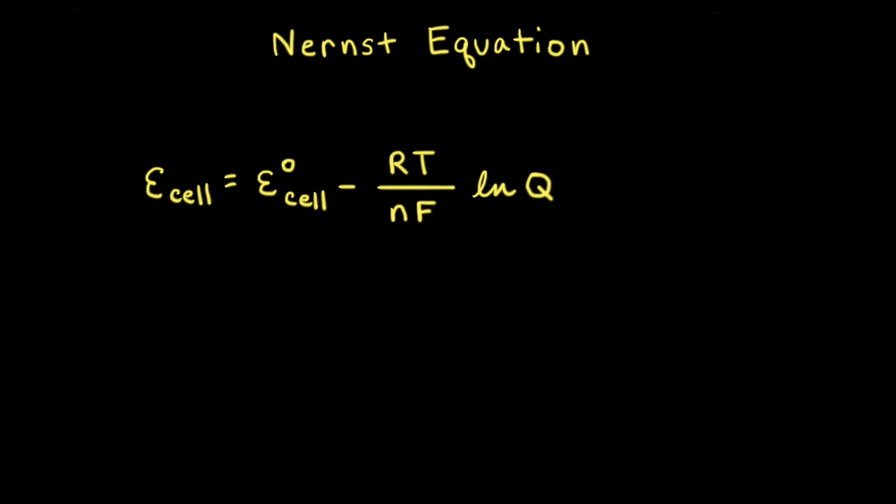We already know how to calculate cell potential when the reactants and products are in their standard states. However, what if that's not the case? We can find cell potential when reactants and products are not in their standard states by using the Nernst equation, which is shown here. And we're going to call that cell potential the instantaneous cell potential.